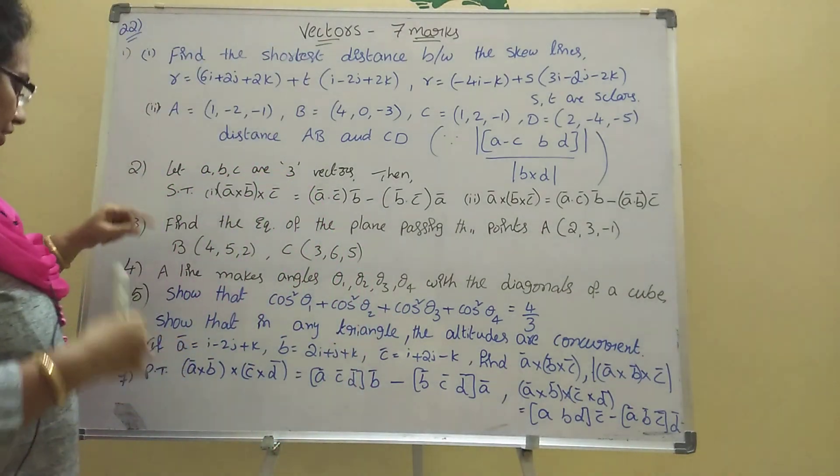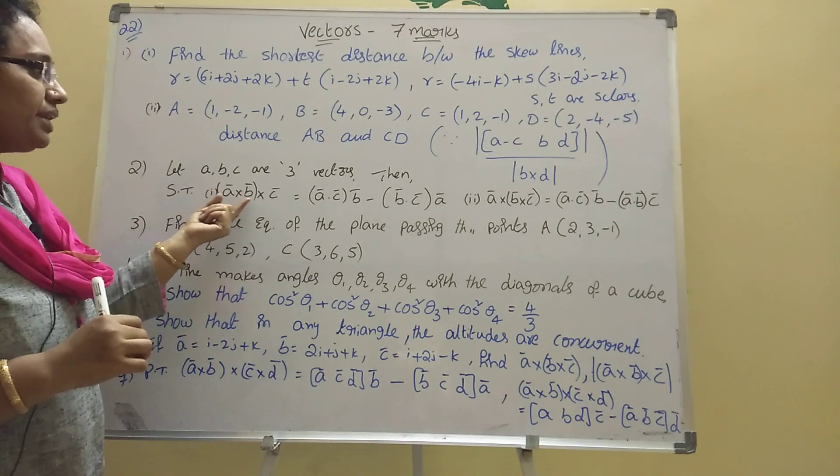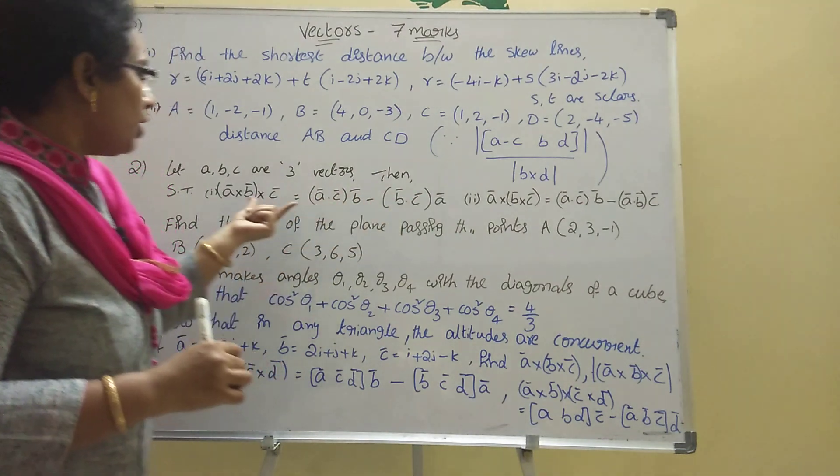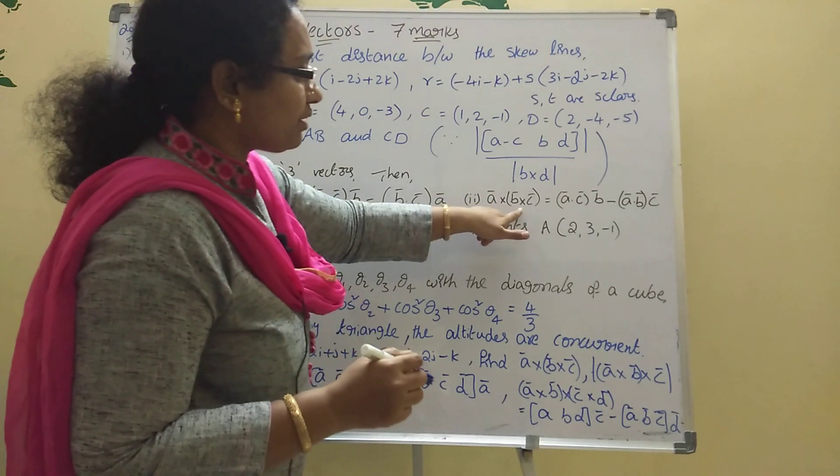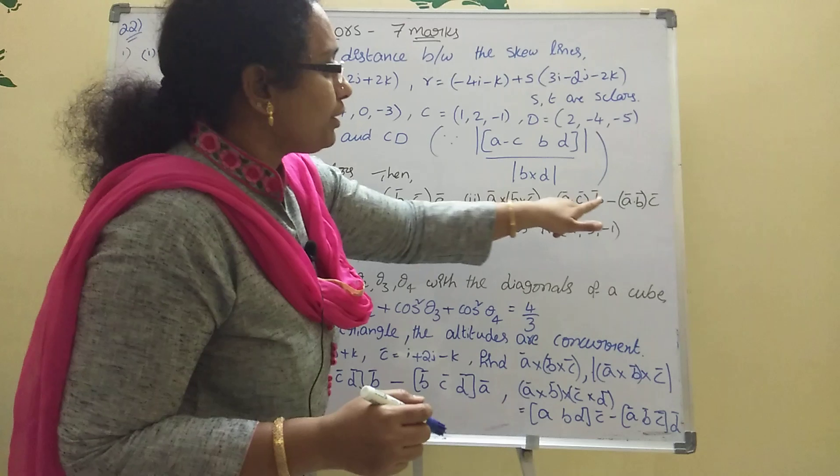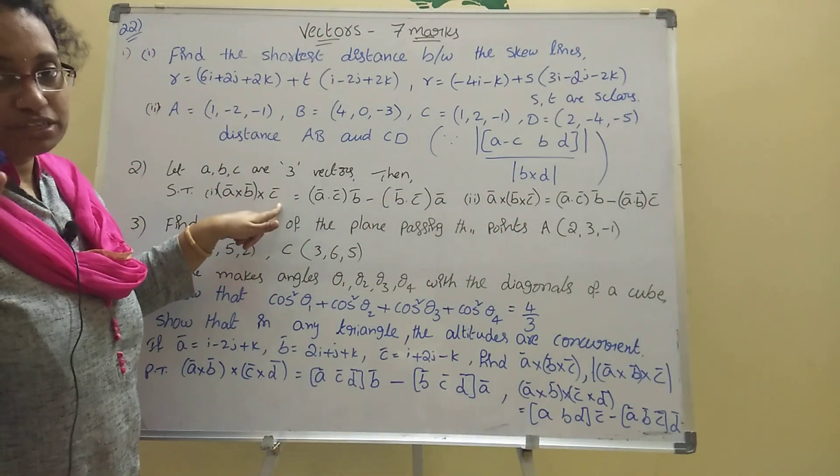Second problem: Let a, b, c be three vectors. Then show that a × (b × c) = (a · c)b - (a · b)c. This is important. This formula we are using in 2 marks and 4 marks also. This is one theorem in vectors.